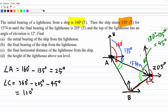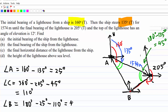Therefore angle B: since the total angles of a triangle sum to 180 degrees, angle B equals 180 minus 25 (for A) minus 110 (for C), which gives 45 degrees. So that is angle B.